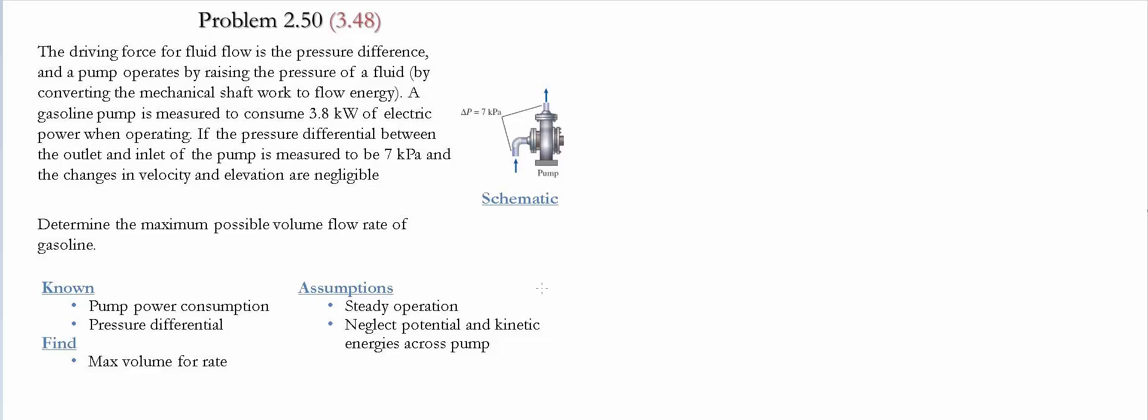If the pressure differential between the inlet and outlet of the pump is measured to be 7 kilopascals, and the changes in velocity and elevation are negligible, we need to determine the maximum possible volume flow rate of gasoline through the pump.